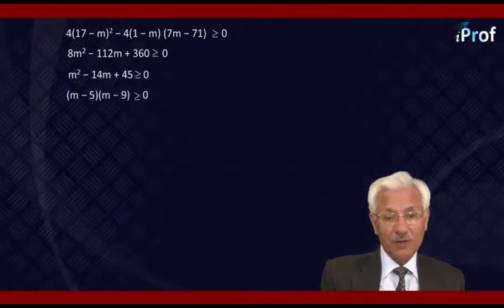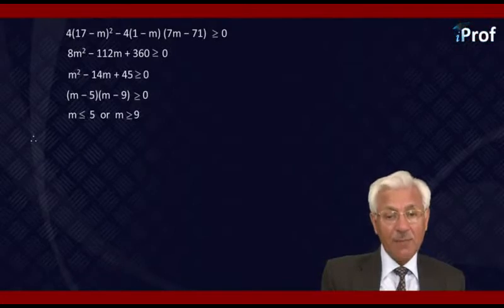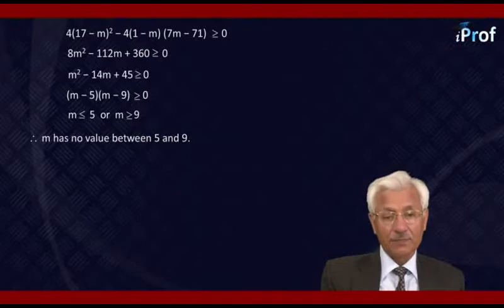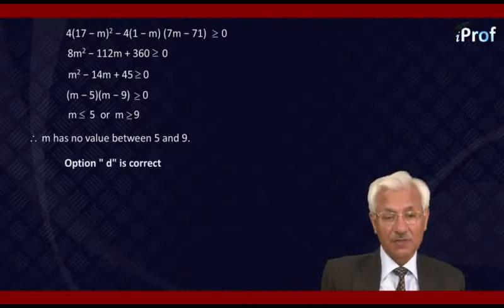The product is positive, which means either both factors are positive or both are negative. That means either M is less than or equal to 5 or M is greater than or equal to 9. Therefore, M has no value between 5 and 9, which shows that the given expression cannot lie between 5 and 9. Option D is correct.